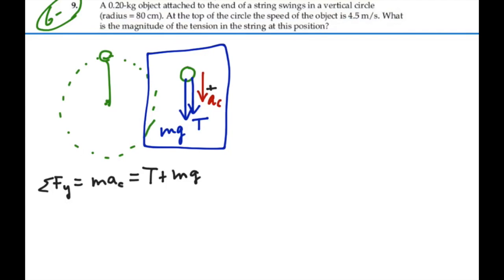We want to find the tension, so we're going to subtract the mg from both sides. So our tension will be equal to mass times centripetal acceleration minus the weight. In other words, this is mass times velocity squared over r minus the weight.